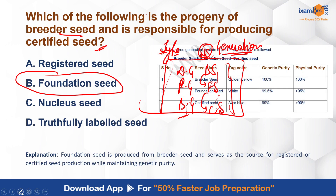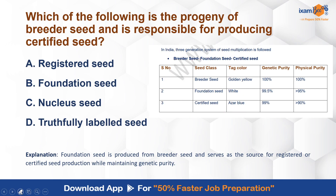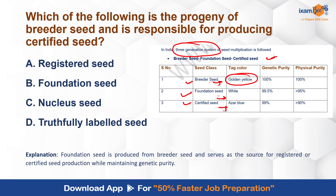This table is very important — it covers everything you need. In India, a three-generation seed system is followed: breeder seed, foundation seed, and certified seed. The tag colors are golden yellow for breeder seed, white for foundation seed, and azure blue for certified seed. You must also remember the genetic purity and physical purity standards for each. These four things — generation, tag color, genetic purity, physical purity — you must memorize.